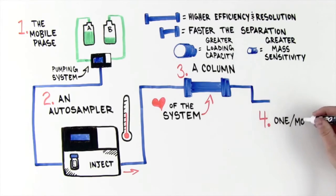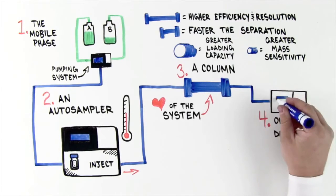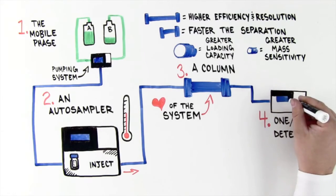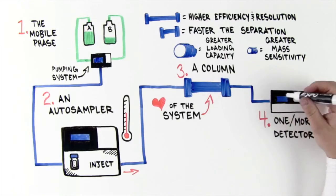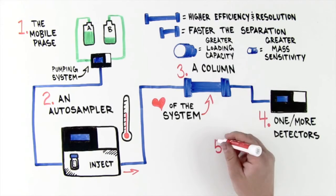4. One or more detectors in series. The detector receives the result of the sample separation from the column and monitors a physical property which changes as the sample elutes.